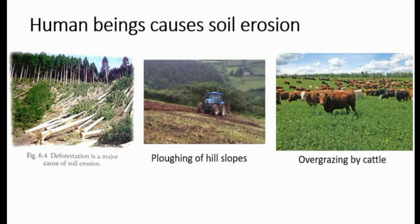Human beings also cause soil erosion. The roots of trees and plants hold the soil together. Felling of trees, or deforestation — cutting down trees on a large scale — is a major cause of soil erosion. When trees are cut down, the soil becomes loose and is easily carried away. Another human factor is ploughing of hill slopes, which also makes the soil loose. Overgrazing by cattle similarly leads to soil erosion.